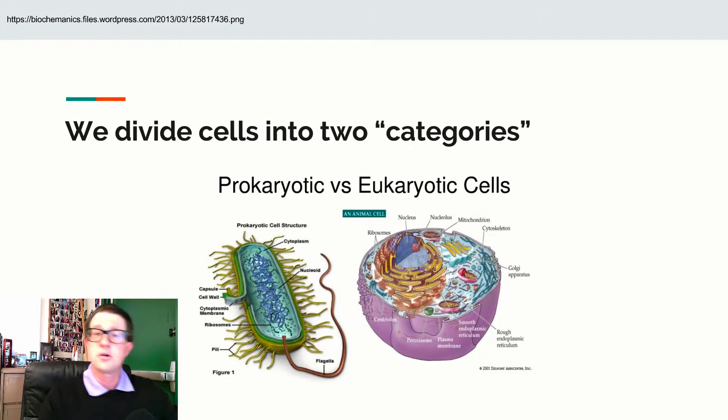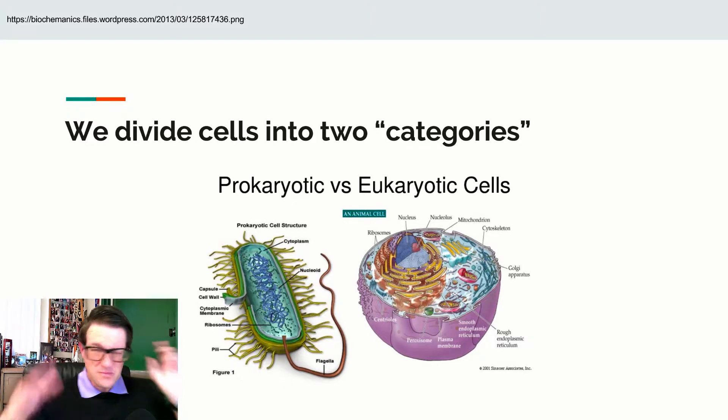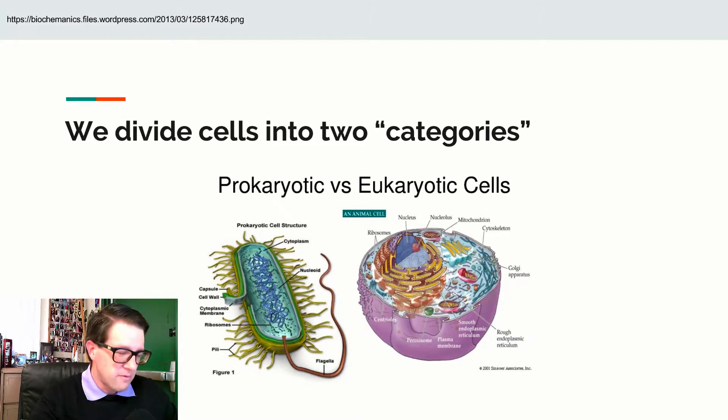When we look at cells, we put them into two categories. One is called prokaryotic. The other one is called eukaryotic. And there's lots of differences between them, but we'll deal with those later. We'll just call one of them prokaryotic, one of them eukaryotic.